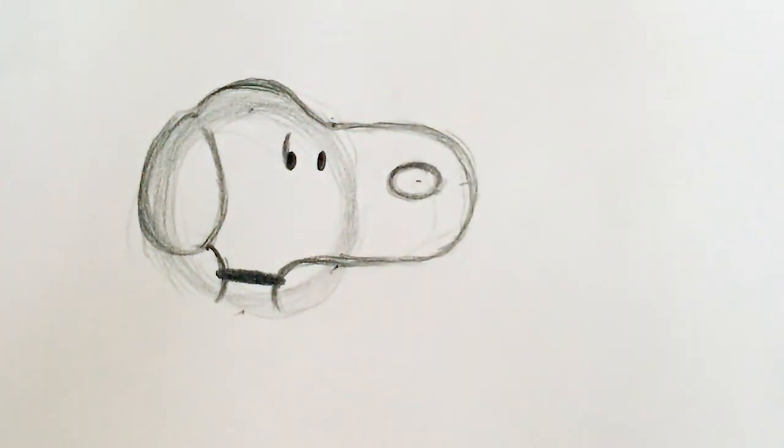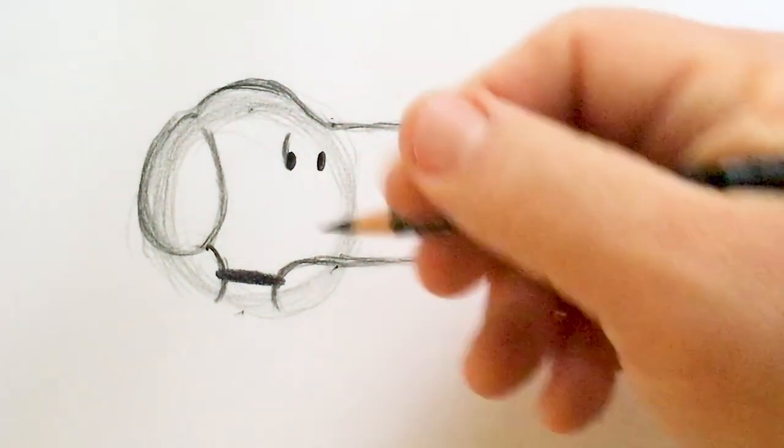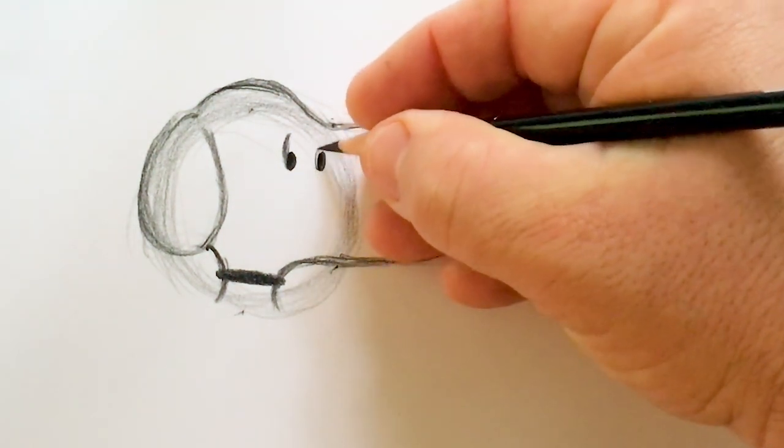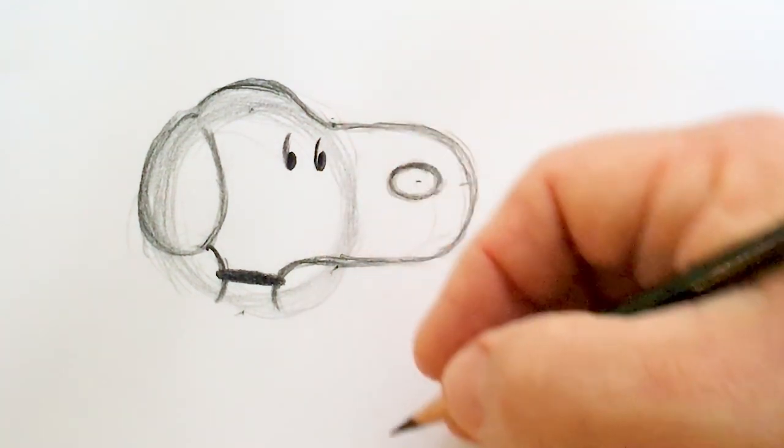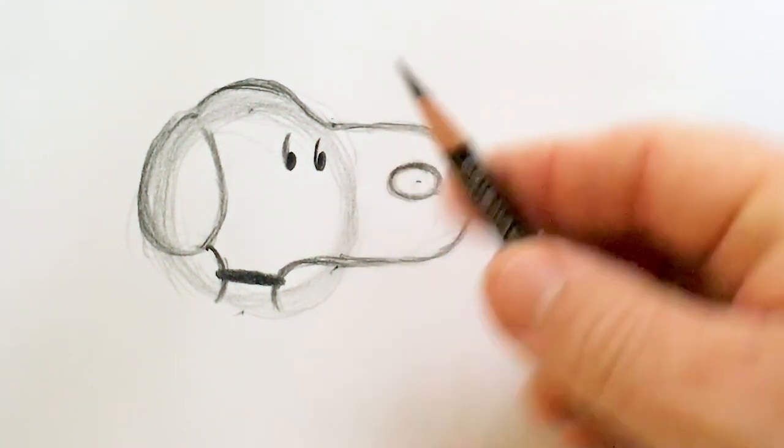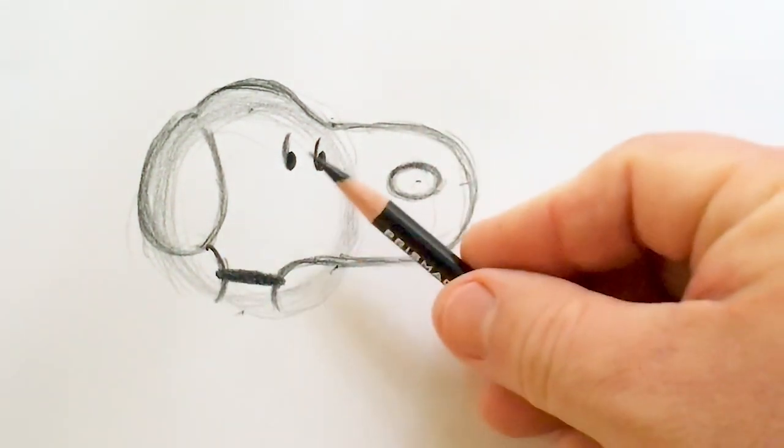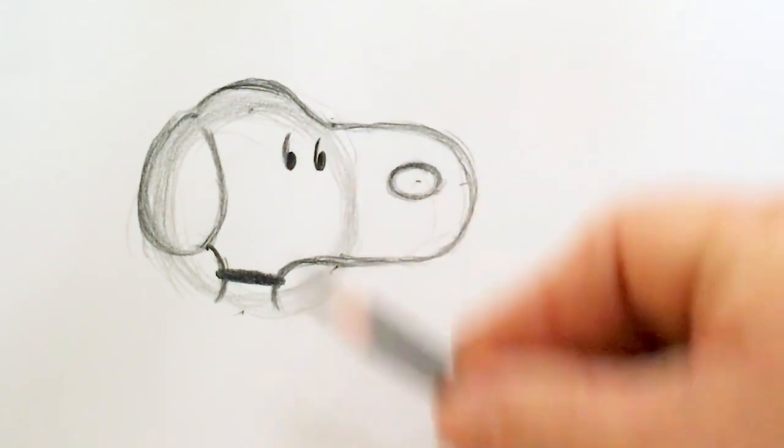And just bring another one off this side here. Now if you wanted your Snoopy to look the other way, you would just draw those curves on this side. Or you wanted him to look up, you would draw the pupil at the top.